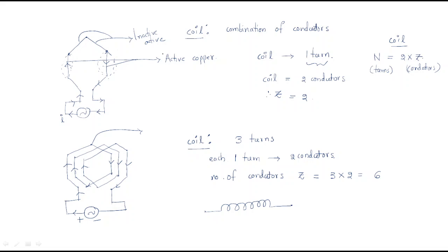In the last session we discussed about how poles are formed and coil formation. The coil is represented such that one turn starts from one end and finishes at the other. The second turn and third turn continue similarly. Each coil is represented by its number of turns, and every coil must consist of two conductors.